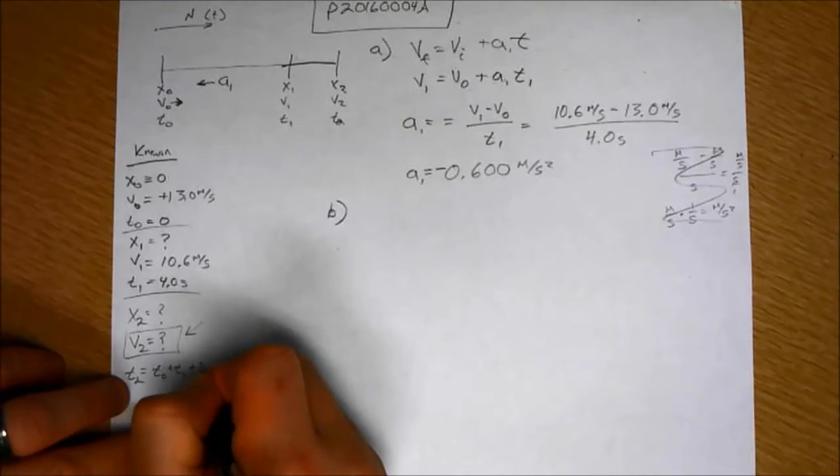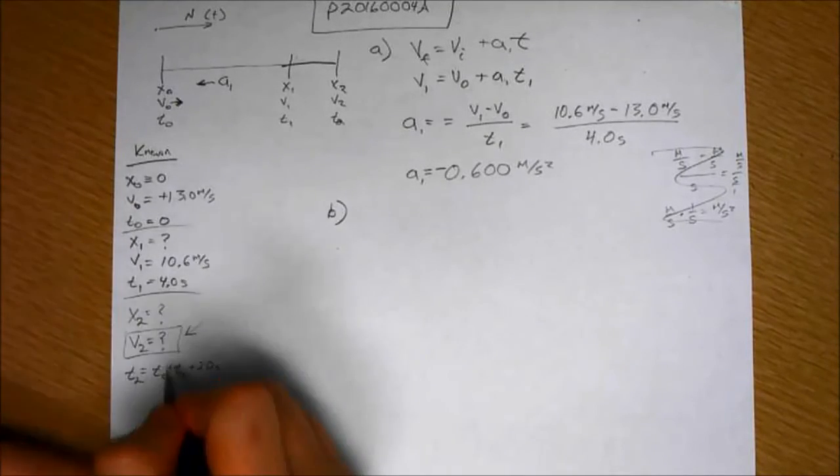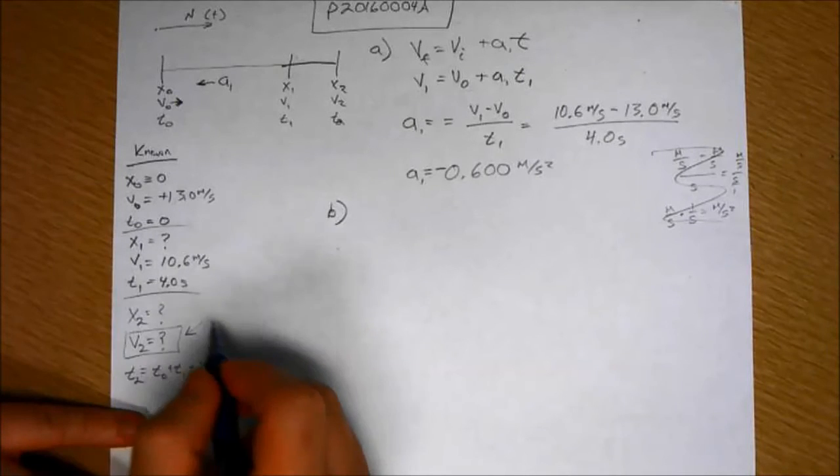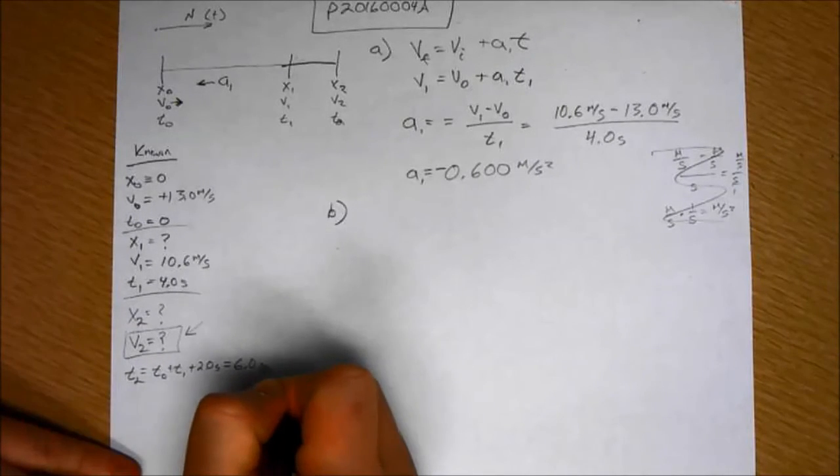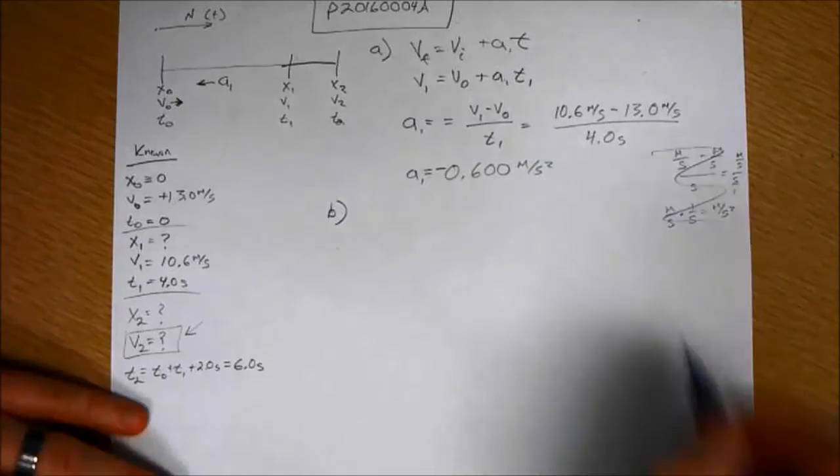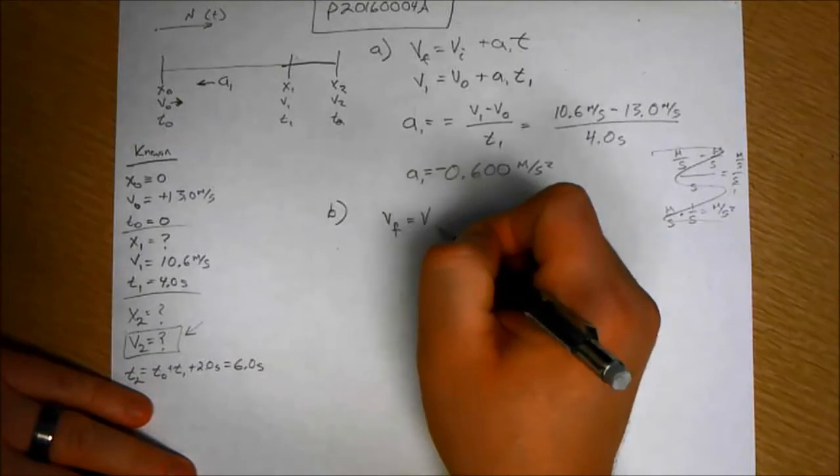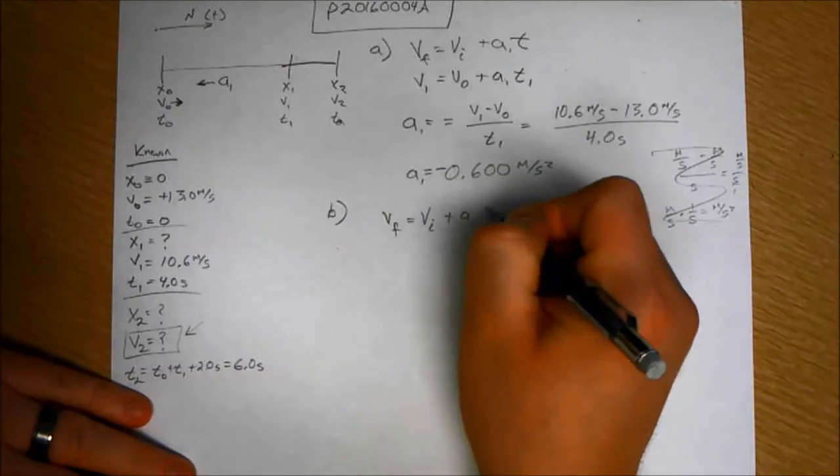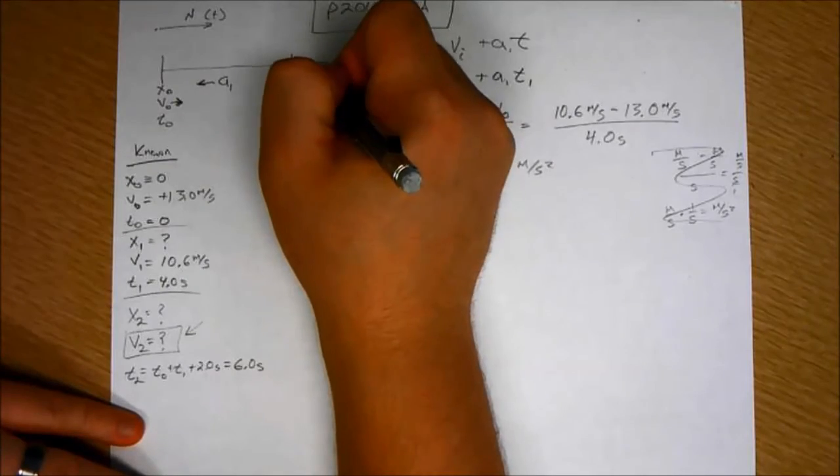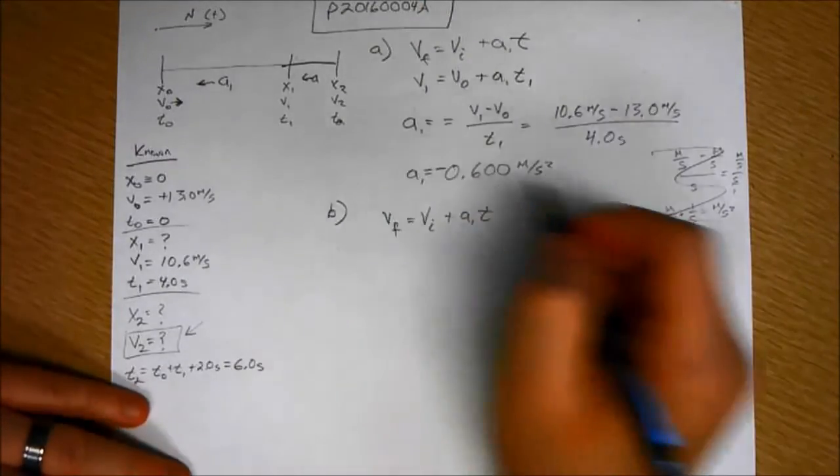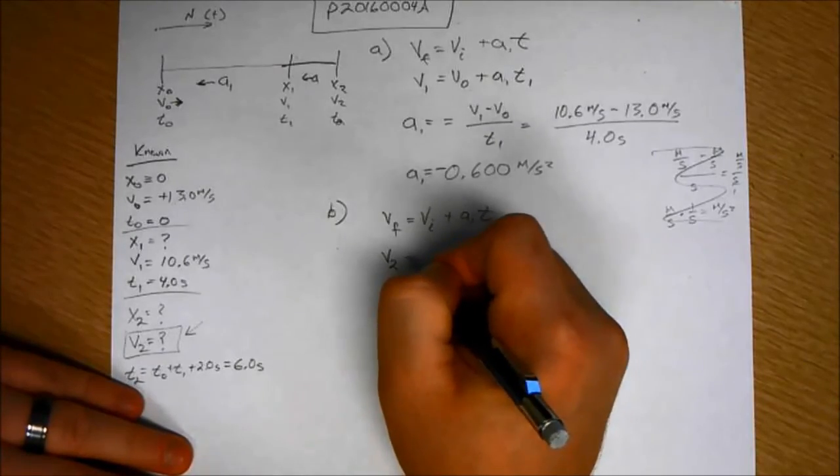T2 equals T0 plus T1 plus 2.0 seconds, which is what they read in the problem. So T1 is 4 seconds. T2 will then equal 6.0 seconds. We're asking for the velocity. V final equals V initial plus A1T. The acceleration is the same here.